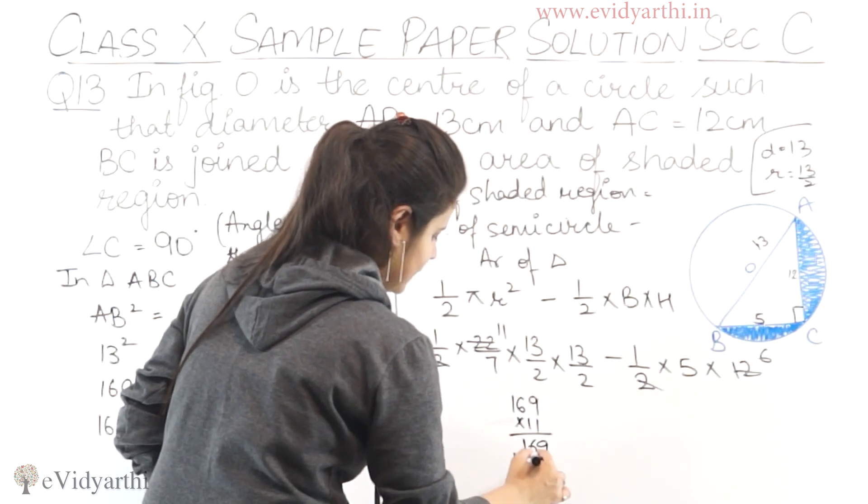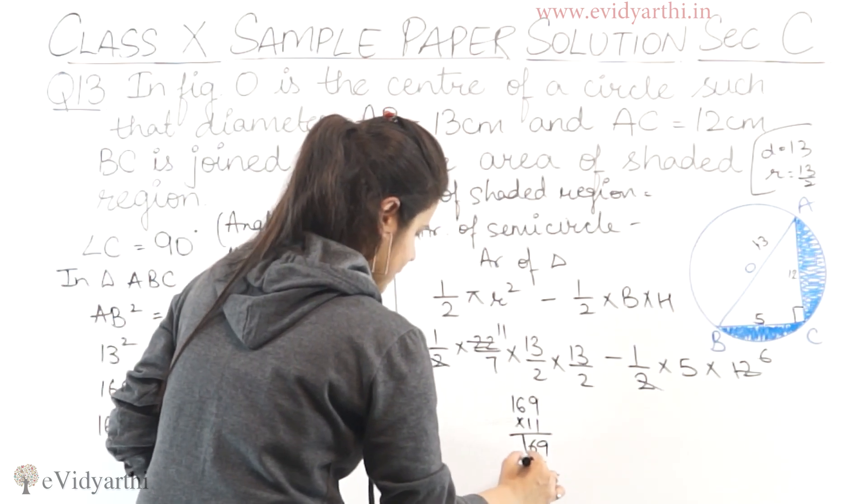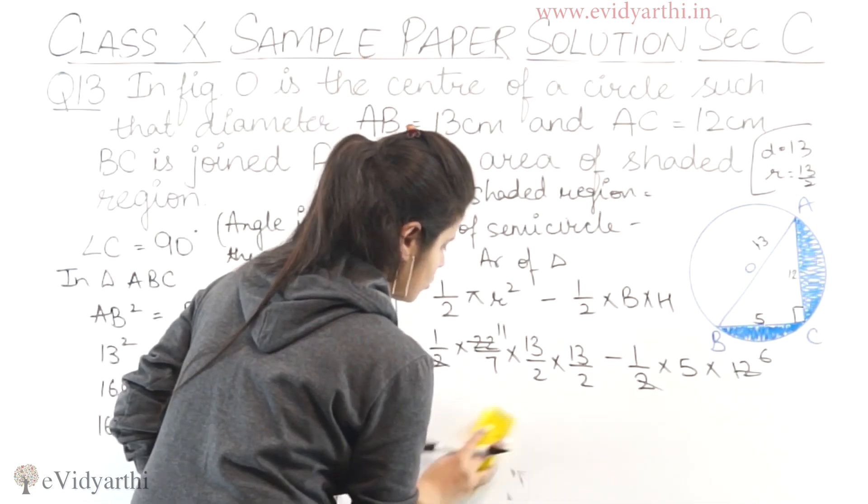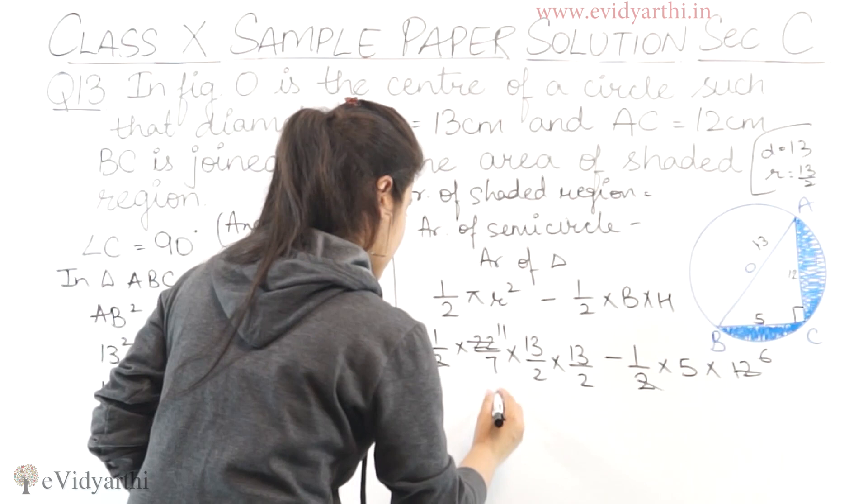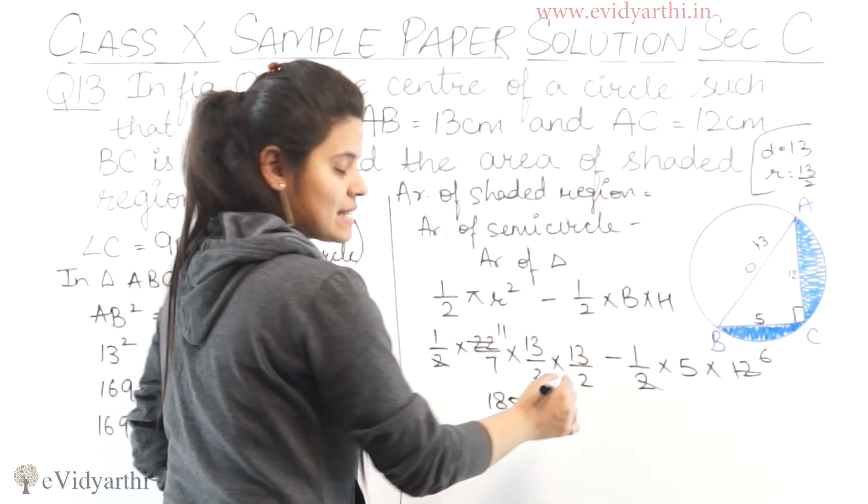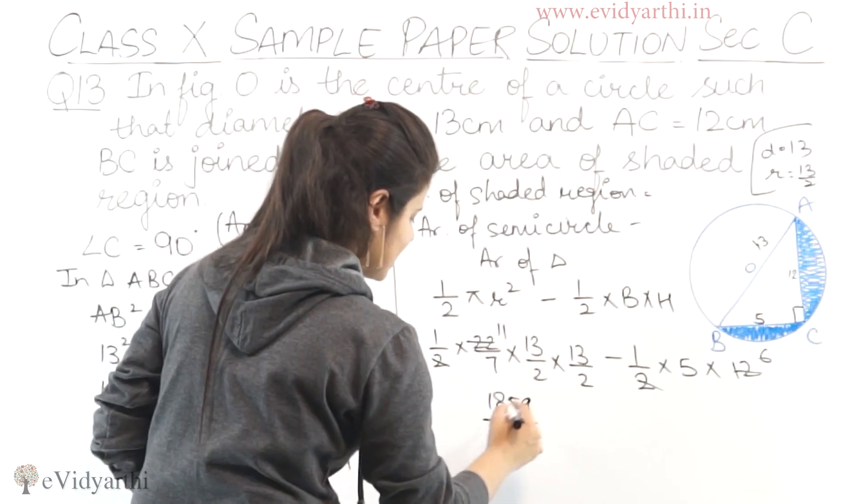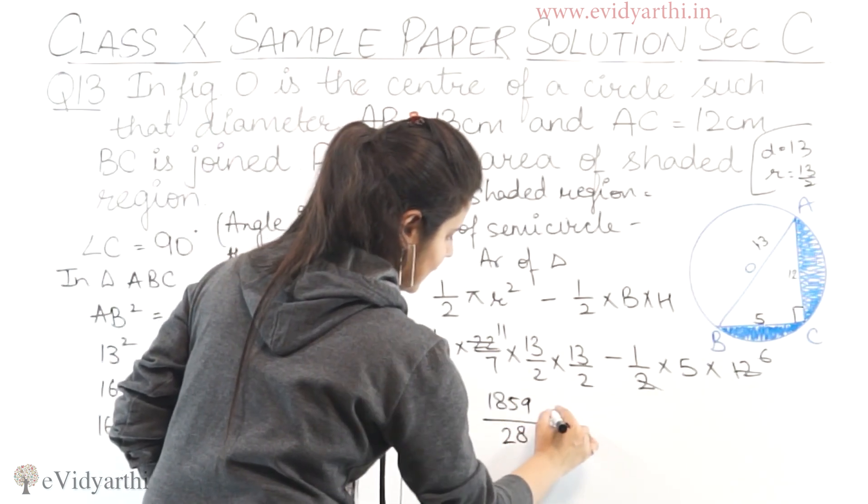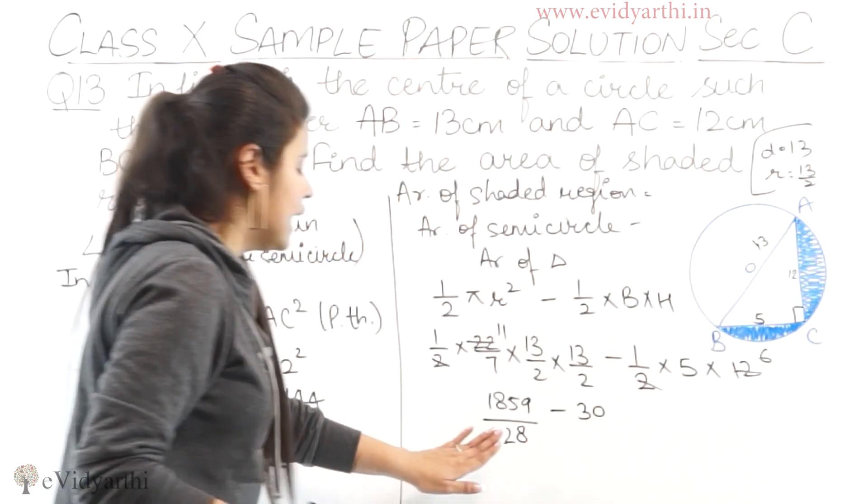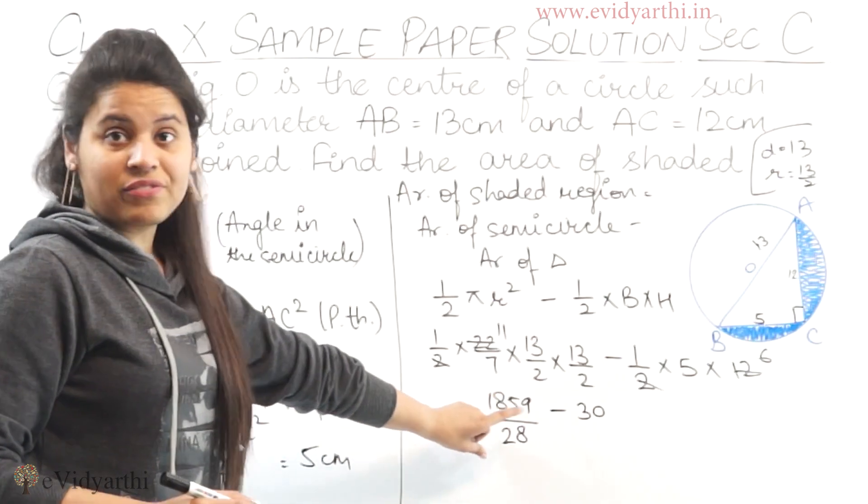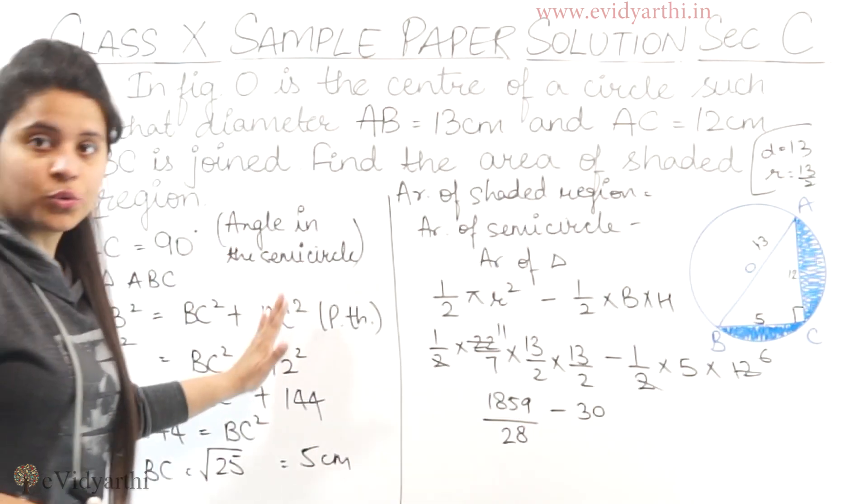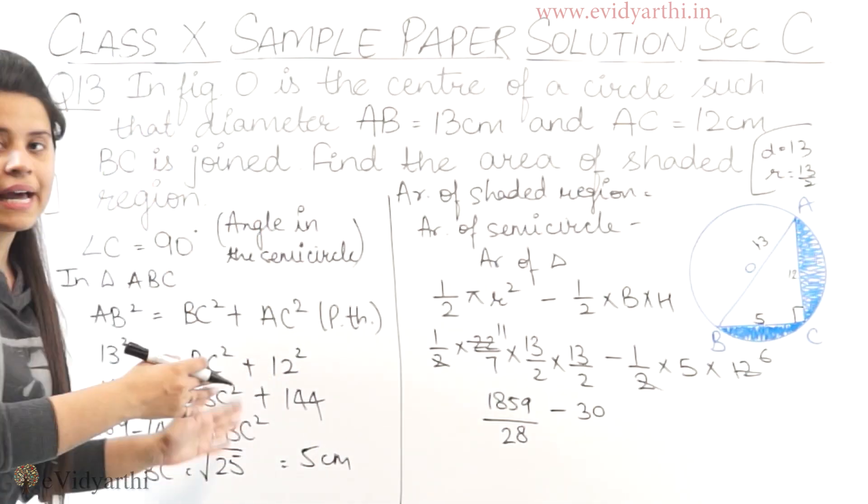So 13 × 13 is 169. Then 169 × 11 equals 1859. This gives us 1859 upon 28 minus 30. Now we need to divide 1859 by 28. You can pause the video here to note this down.